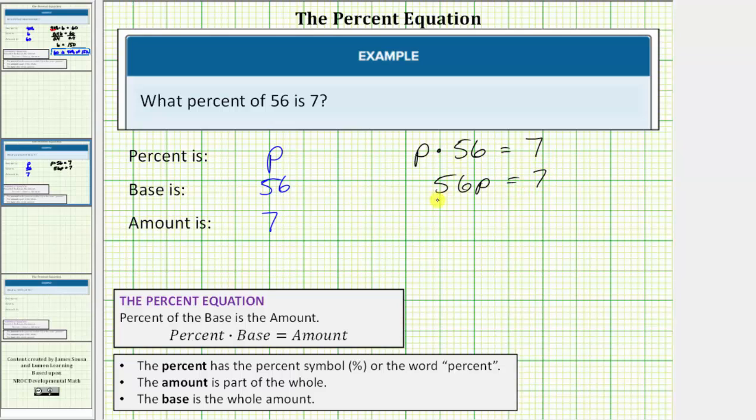So for p, we divide both sides by 56. On the left, this simplifies to 1p or p. So p equals 7/56, but we're looking for a percent. So what we'll do is divide to convert the fraction to a decimal, then convert the decimal to a percentage.